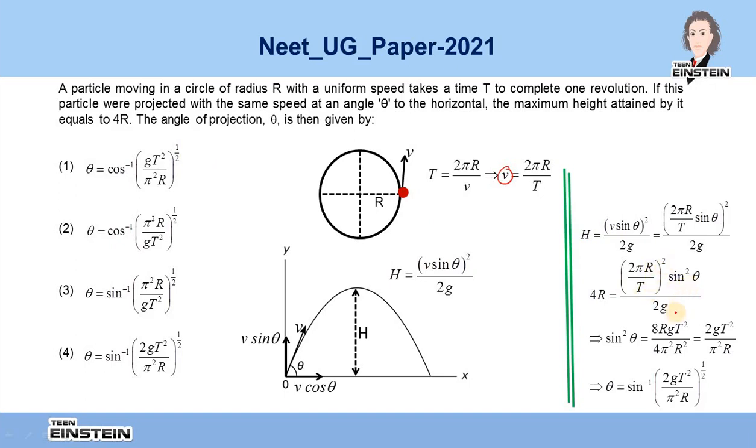Upon simplification, we can write sin² theta equals 2gT² divided by π²R. Hence the angle of projection theta equals sin⁻¹(√(2gT²/π²R)), and the fourth option is the correct answer.